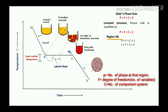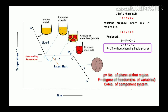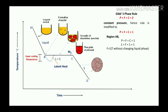For region A to B using P + F = C + 1: P, the number of phases, is 1 because it is 100% liquid. F is the degree of freedom. C is 1 because it is a pure metal, a single-component system. So 1 + F = 1 + 1, giving F = 1. This means temperature is changing without changing the liquid phase — from A to B, it is 100% liquid and temperature is simply decreasing down to the melting point.